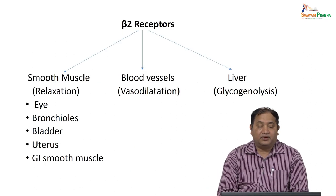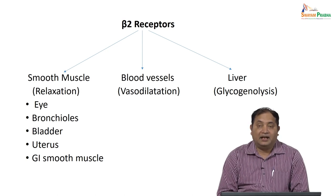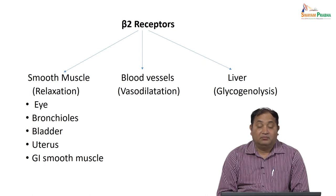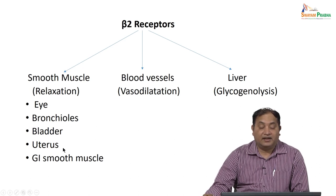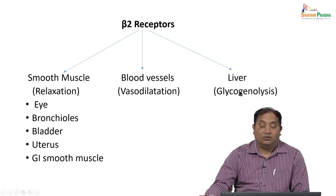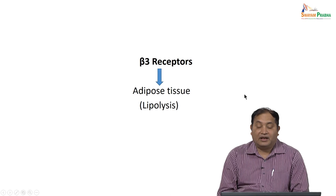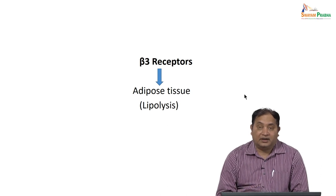Beta-2 receptors are mostly localized in smooth muscle. Stimulating beta-2 receptors causes relaxation, and this is relevant in conditions like glaucoma. In bronchial asthma, stimulating beta-2 receptors causes bronchodilation — so blocking them causes bronchoconstriction and effects on the bladder, uterus, and GI smooth muscle. Beta-2 receptors are also present in blood vessels, and stimulation causes glycogenolysis. Beta-3 receptors are localized in adipose tissue, and their stimulation causes lipolysis — so they can be targeted in the treatment of obesity.